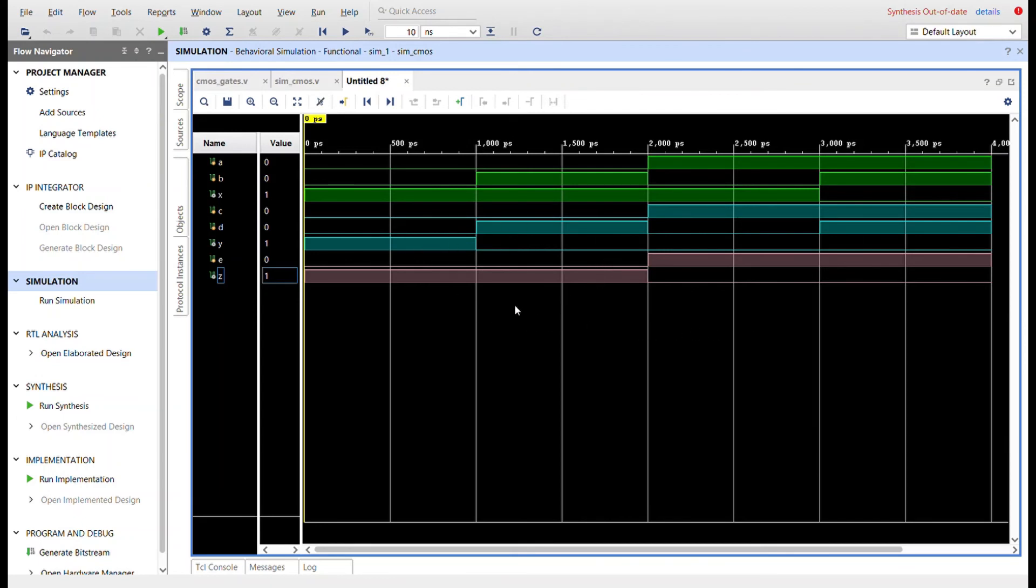NOR is the opposite of an OR. So OR is when they're both off, you get nothing. Anything else, you would get a 1. And NOR is the opposite of that: 1, 0, 0, 0. And then you can see the NOT gate. Right here we have E when it's low, Z is high, and when E is high, Z is low.